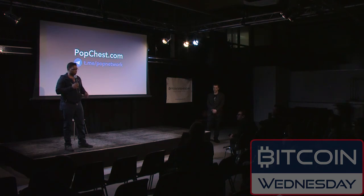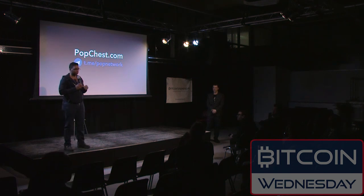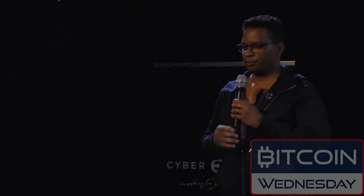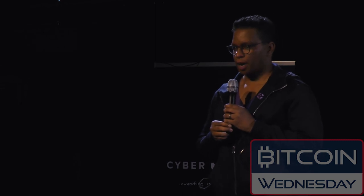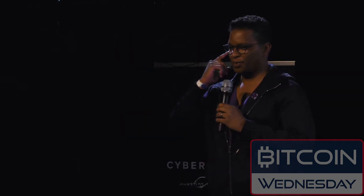Question: so you're doing an ERC20 token that will turn into the token on the Popchest network? Yes, the Pop token is an ERC20 token. So the first site built on top of the video distribution platform is popchest.com, and the platform is an Ethereum smart contract. Correct. In that case, you did do it right.